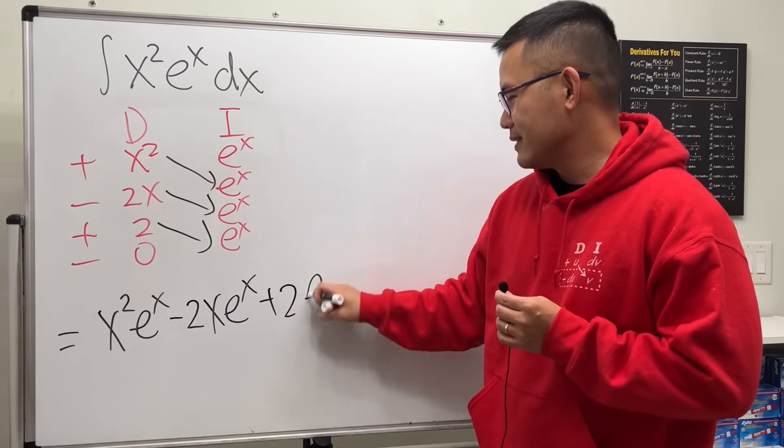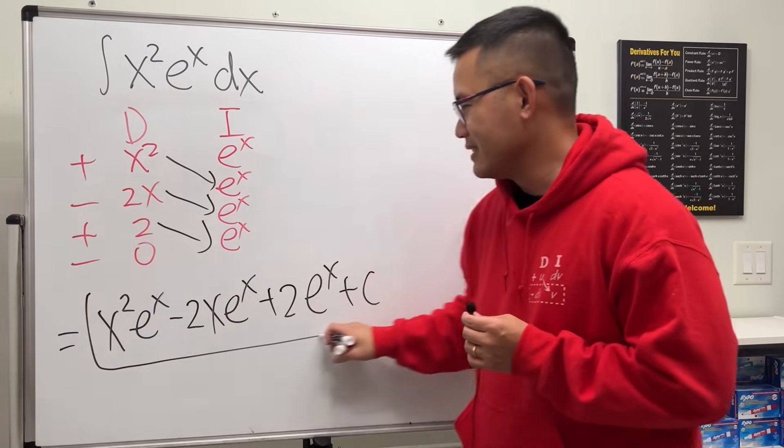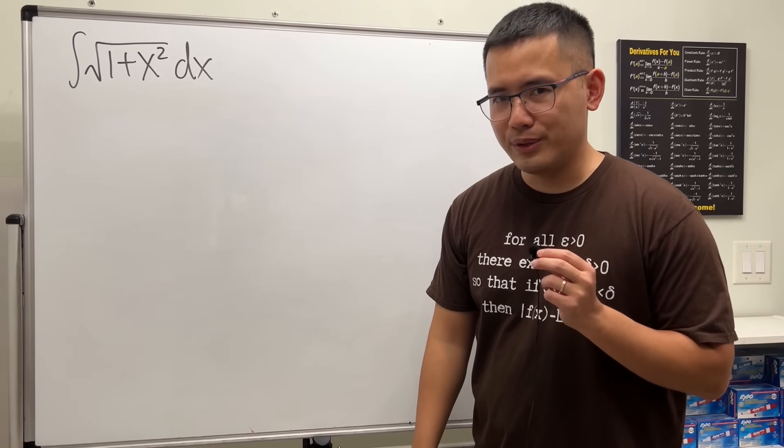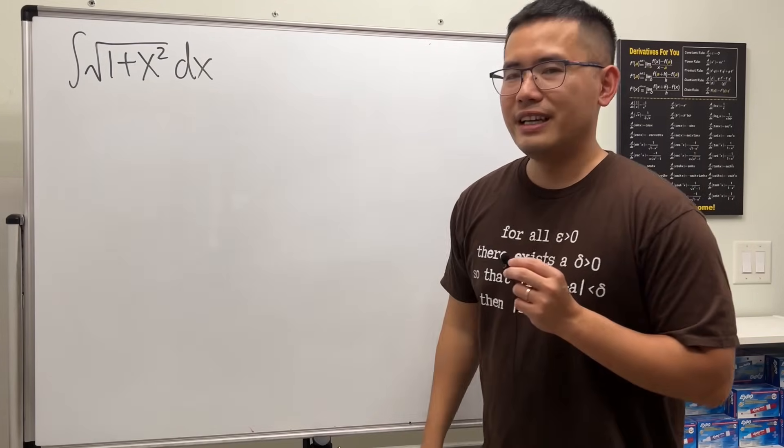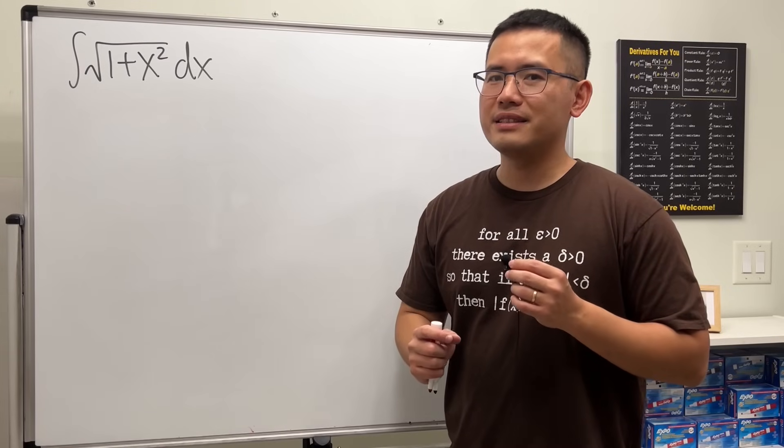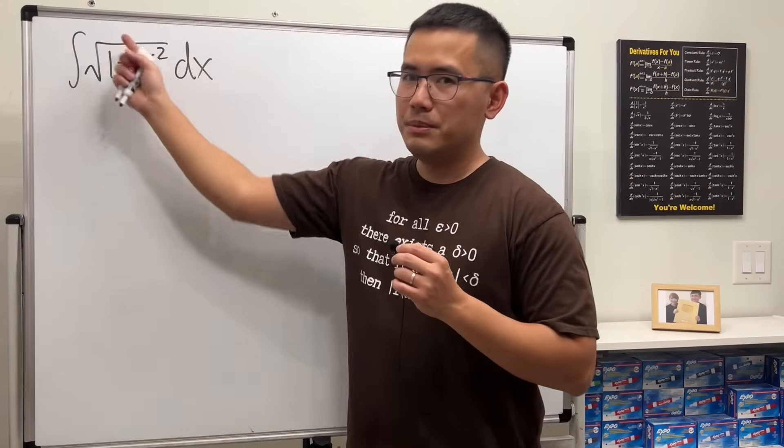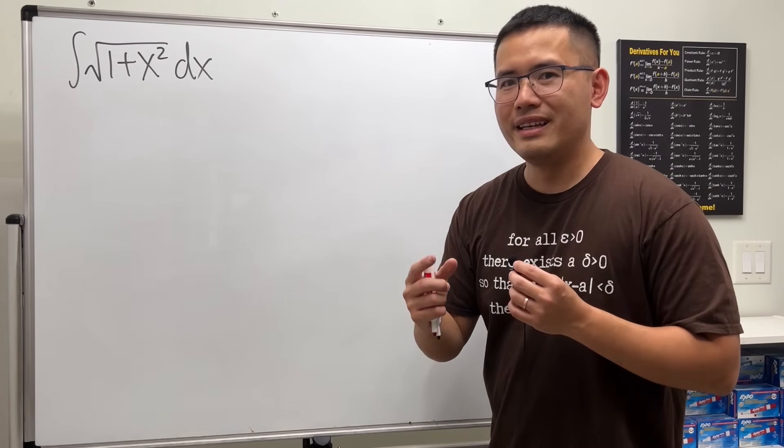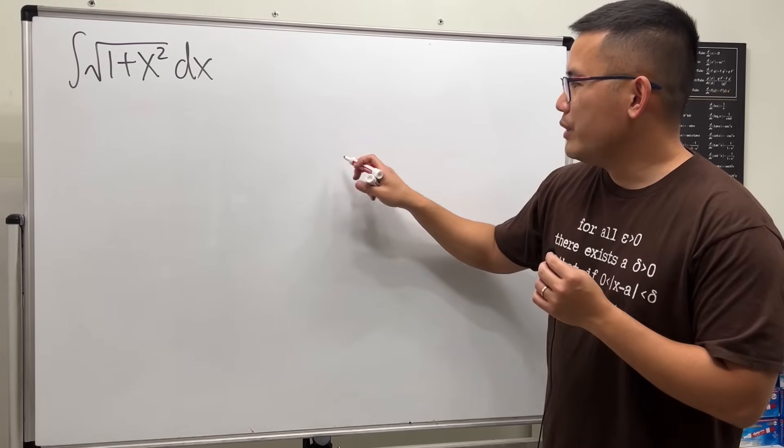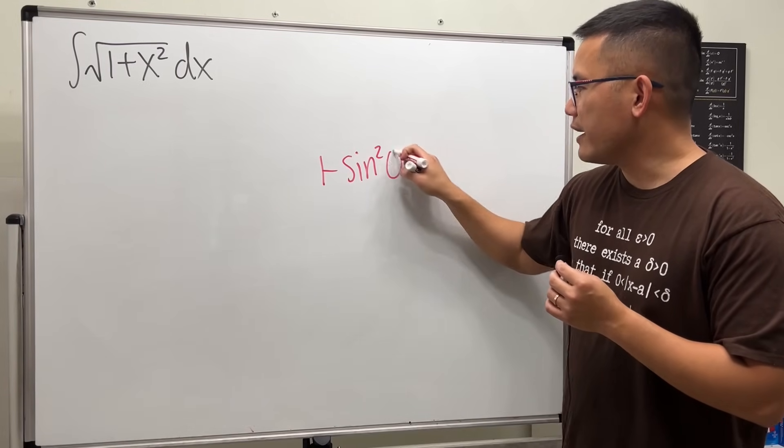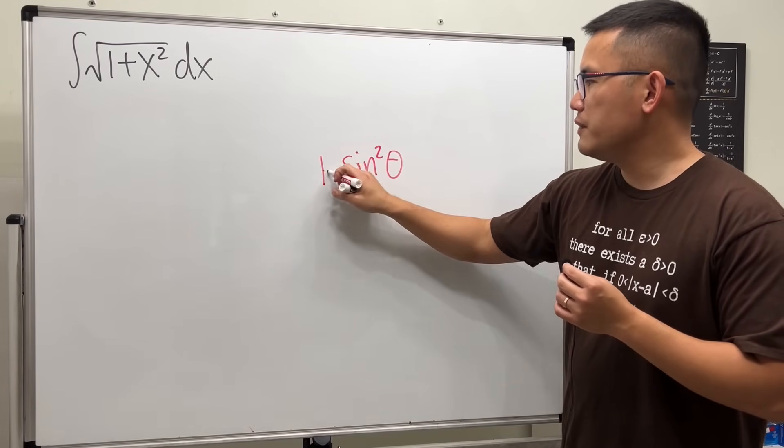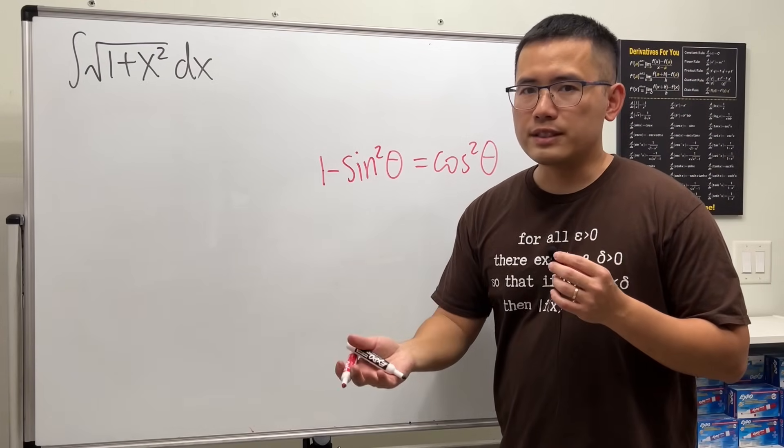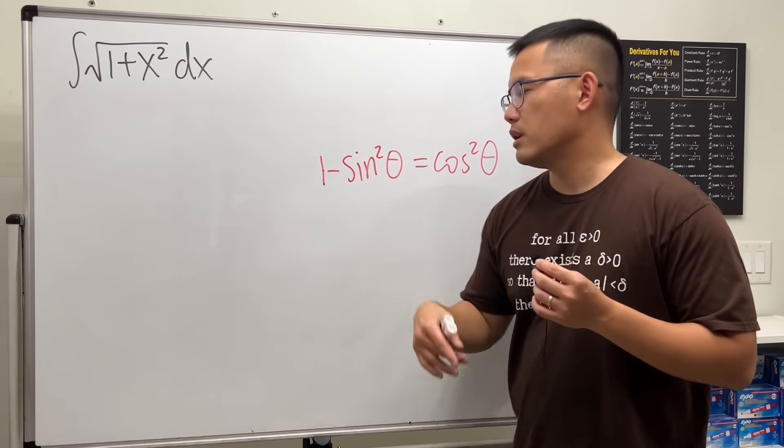Day four. Today's topic is called trig sub, and we are going to integrate square root of 1 plus x squared. The idea is to utilize some trig identities to help us simplify this because it has two terms. How can we combine to just one and then it's a perfect square? Have a look. We know that 1 minus sine squared theta—this right here gives us cosine squared theta because that's just the Pythagorean identity. We know sine squared plus cosine squared is equal to 1, and we just rearrange it.